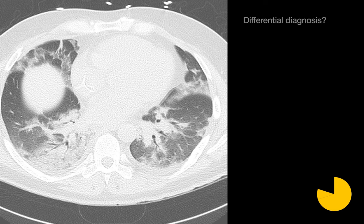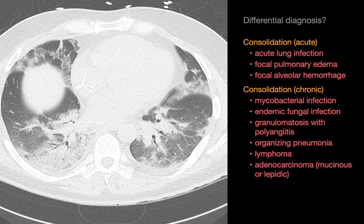What's your differential diagnosis for these opacities? There is extensive multifocal, bilateral consolidation with areas of associated ground glass opacity. The differential diagnosis for this extensive, albeit still non-diffuse, consolidation could be narrowed down significantly if prior imaging and history were available. In this particular case, this was an ED patient who had decompensated relatively rapidly and was diagnosed with influenza.